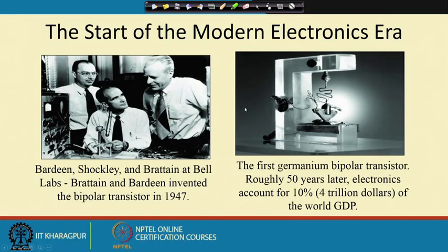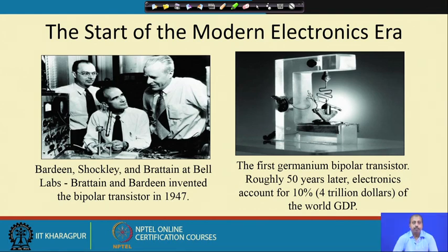The start of this modern electronics era, if you look back into history, you will see that the revolution started in 1947 where a group of scientists at Bell Labs invented the bipolar transistors. 1947 is a very important year for India as well — we got freedom — and similarly on the electronics industry, this is another landmark we achieved in 1947.